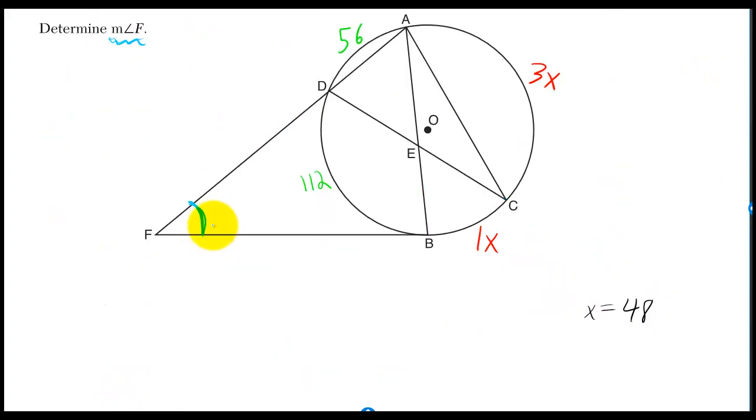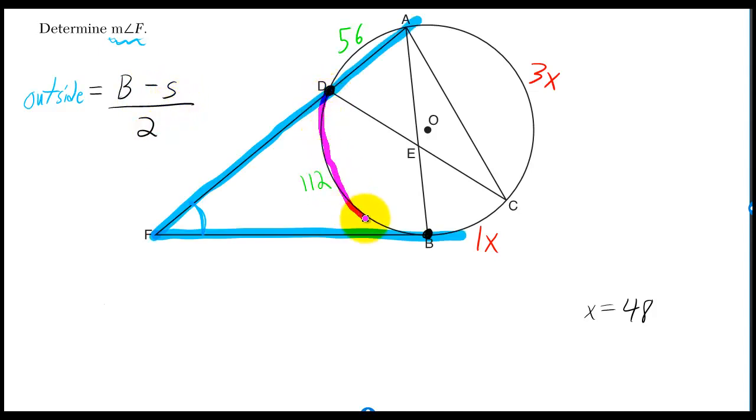Now they want angle F. That's this angle outside. The formula for this outside angle is the big intercepted arc minus the small intercepted arc over 2. The angle intercepts DB and AB. The small arc is 112. The big arc is 3X plus 1X is 4X. We found X was 48, so it's 4 times 48. And that all comes out to 40.